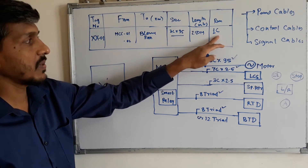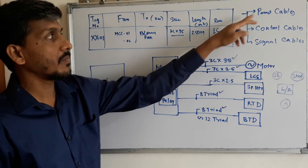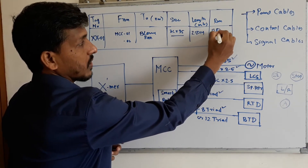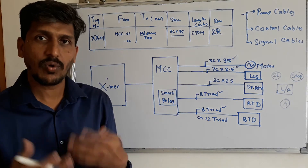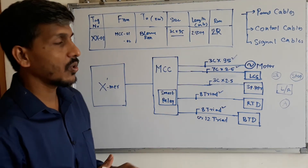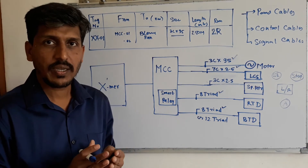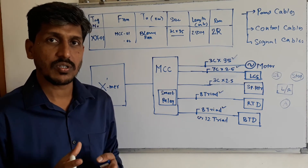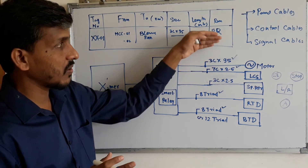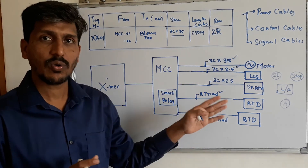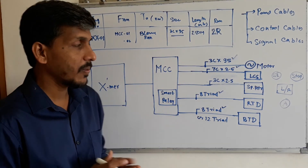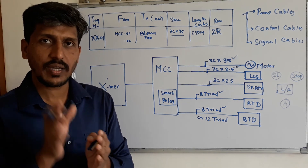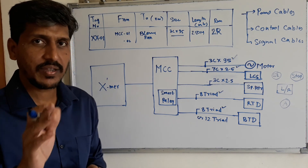The last field is the number of cable runs. For power cables, it could be a single run or two runs depending on the motor rating. All of these cables — power, control, and signal — must be included for every single motor in the project, whether there are 250, 400, or 1000 motors. That's it for the video. If you like it, subscribe and leave any doubts in the comments. Thank you, bye bye.